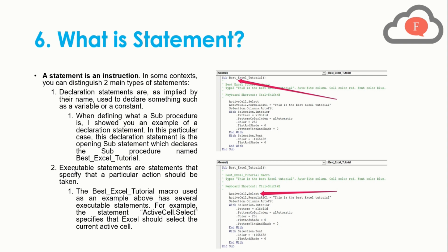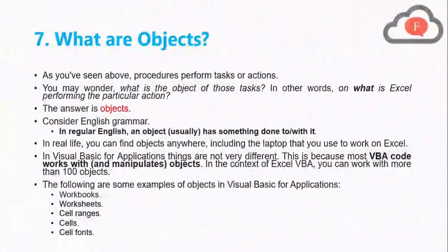For example, the executable statement 'ActiveCell.Select' specifies that Excel should select the current active cell. So the declaration statement states that a program should run within a workbook or sheet, while executable statements actually run the program by performing specific actions.